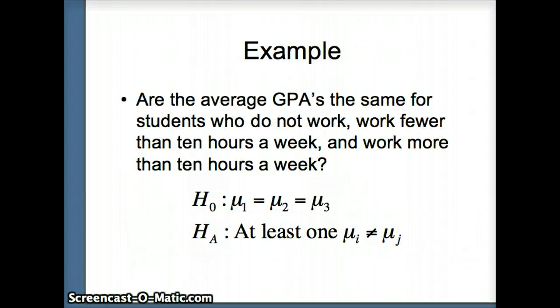Okay, our next data set looks at average grade point averages for students who do not work, for students who work fewer than 10 hours a week, and for students who work more than 10 hours a week. And these are 11th grade high school students, and they are using a 12-point scale for grade point averages. A-plus is 12, A is 11, A-minus is 10, etc.